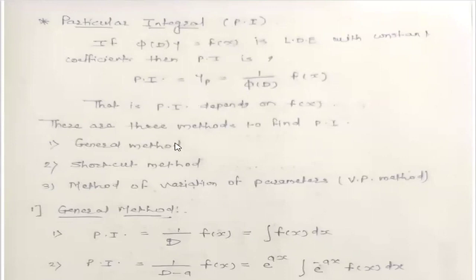There are three methods to find PI. The first one is the general method, the second is the shortcut method, and the third is the method of variation of parameters, also known as the VP method.